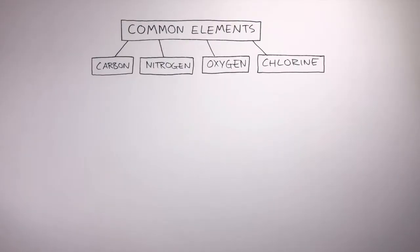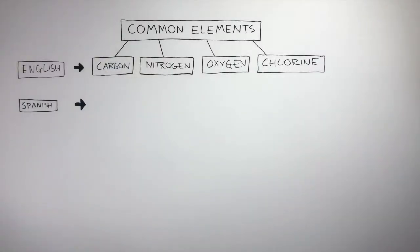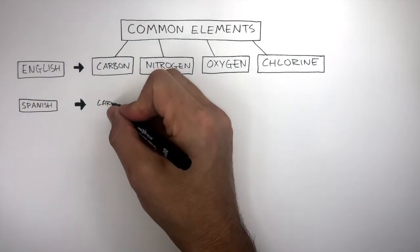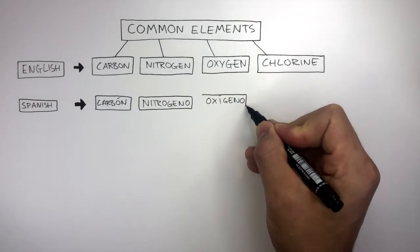These are the names of these elements in English. But what about Spanish? In Spanish, they're called Carbon, Nitrogeno, Oxygen and Chloro.